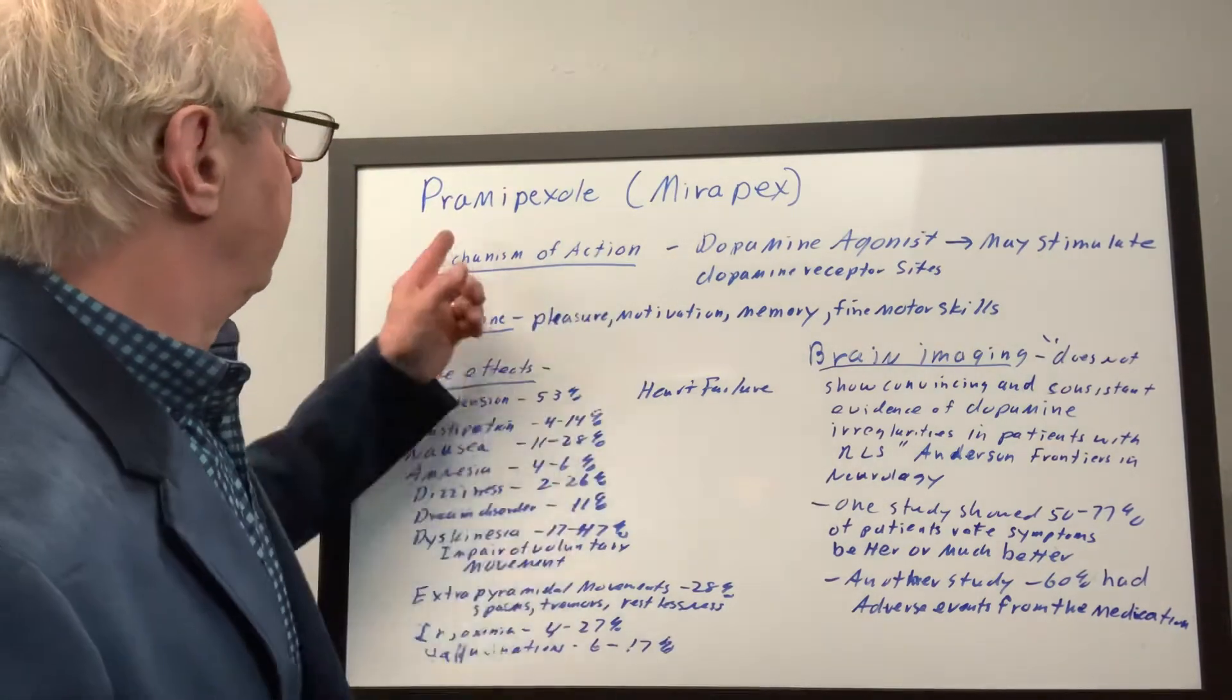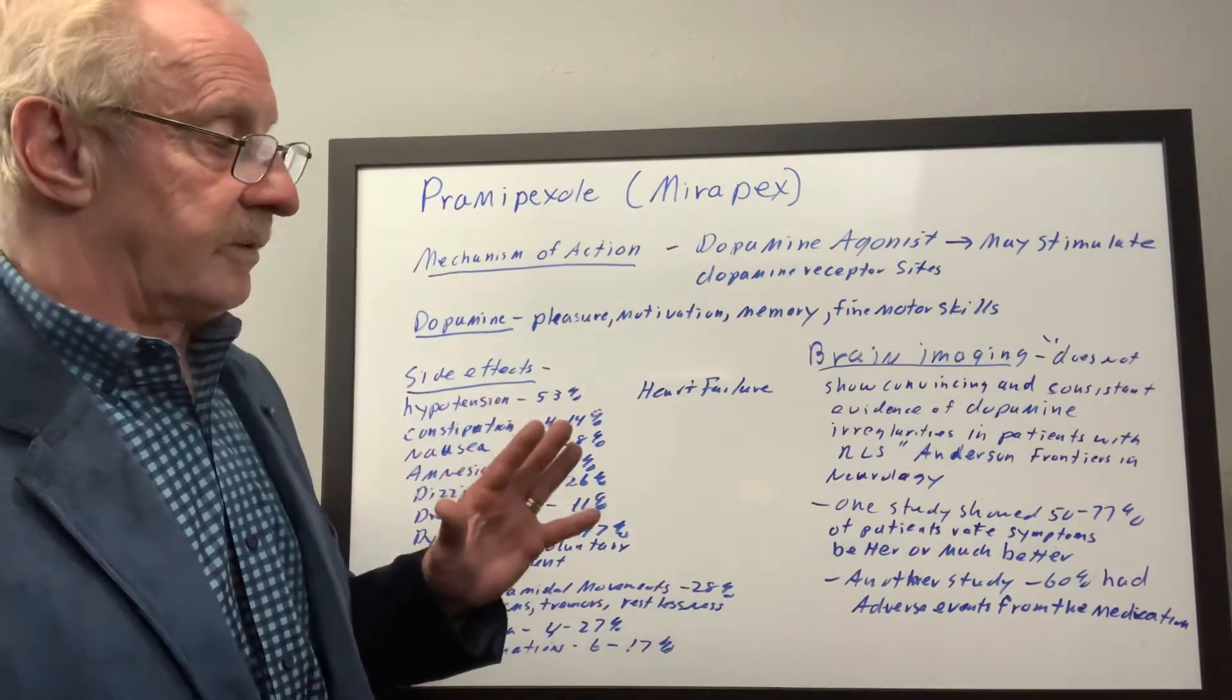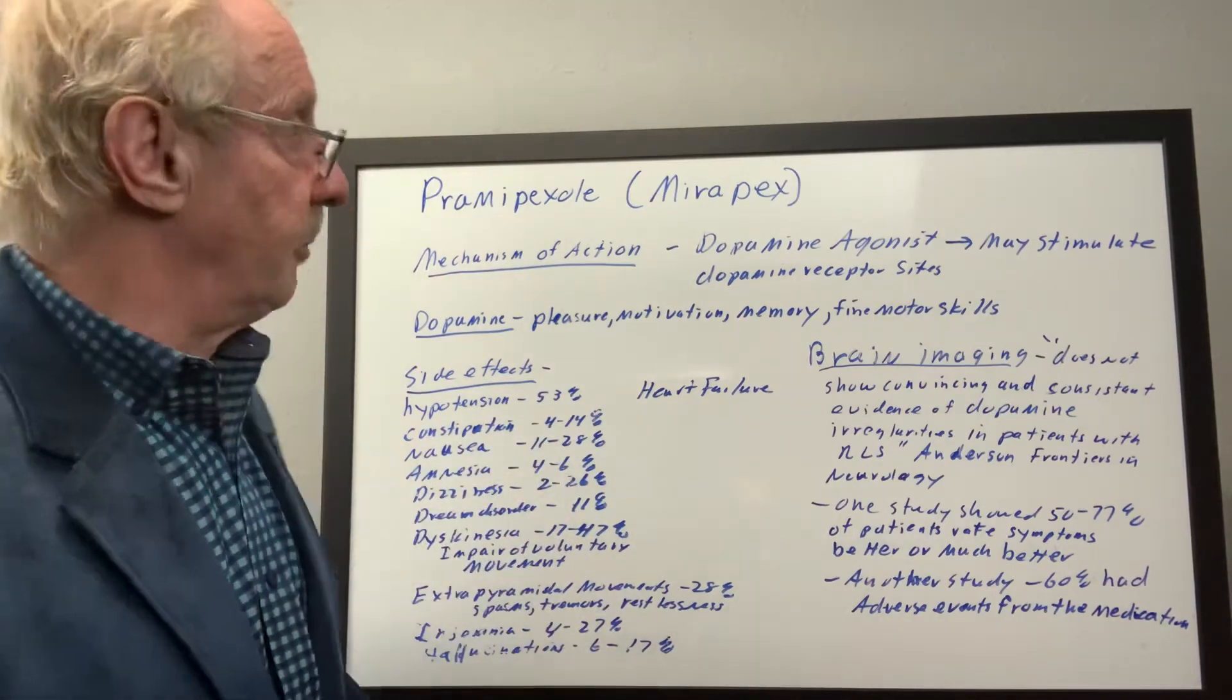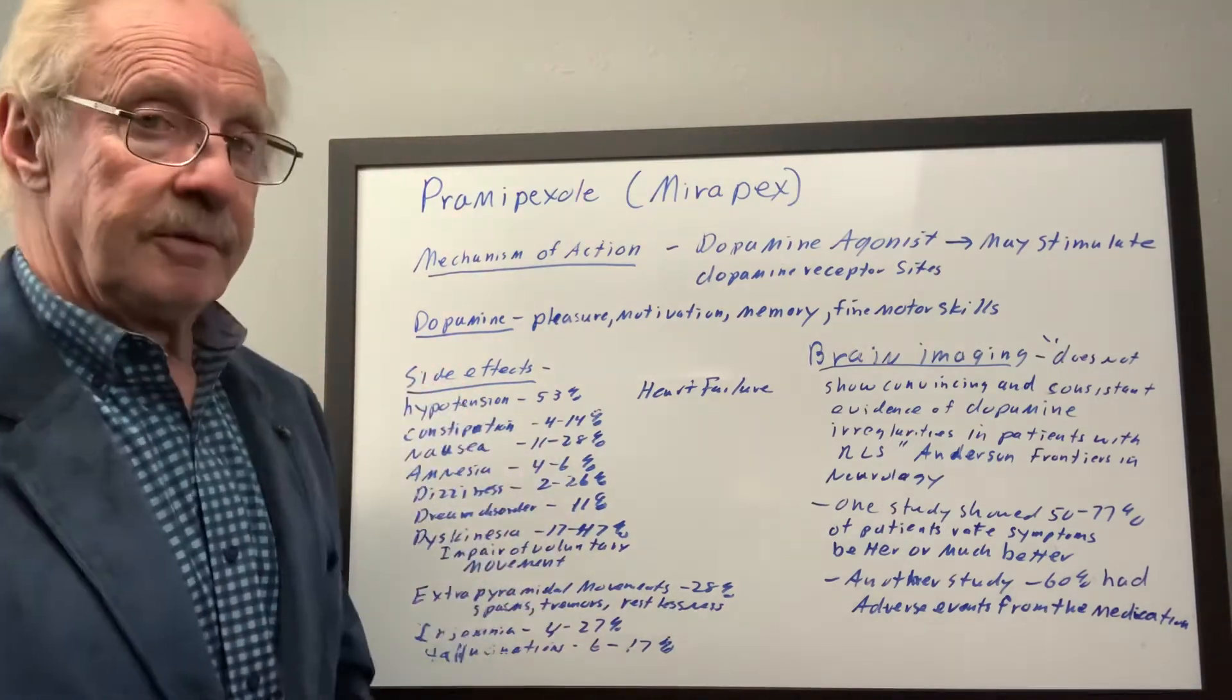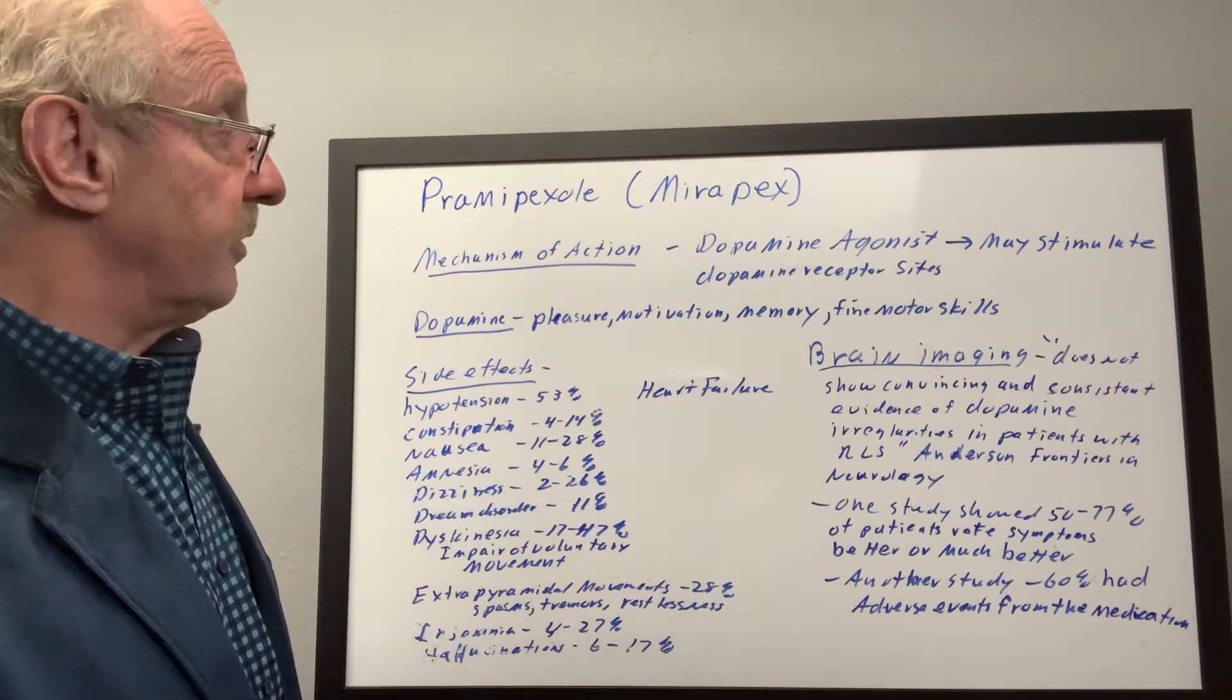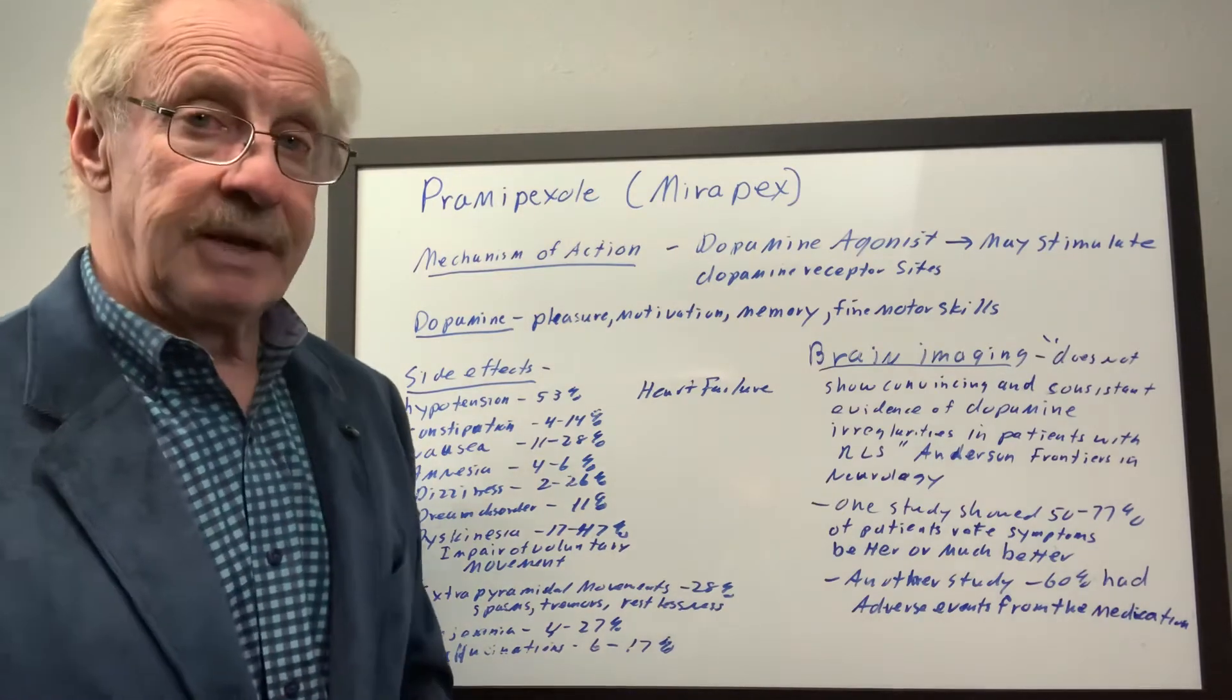But first of all, Mirapex - another name for it is pramipexole. That's a term that you don't hear as much. Mirapex is more commonly used. The mechanism of action is not totally understood, but it's thought to possibly be that it's a dopamine agonist.